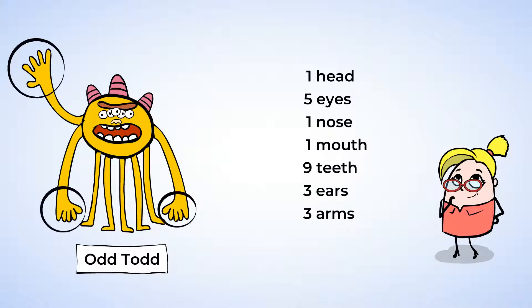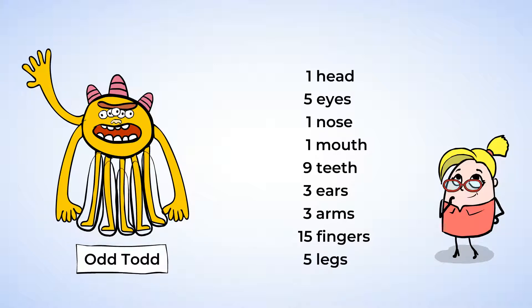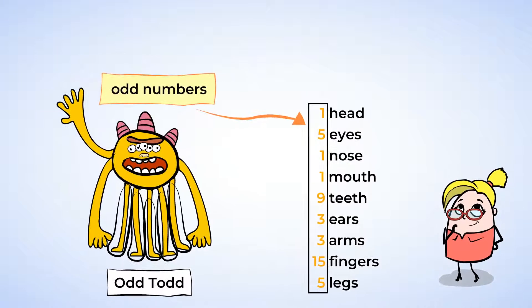three ears, three arms, 15 fingers, and five legs. Ooh, that's also a lot of body parts. But something is very different about Odd Todd when compared to Even Steven. Ah, everything about Odd Todd is an odd number.